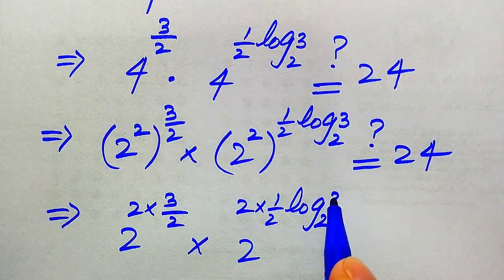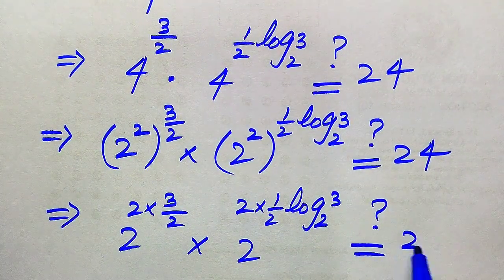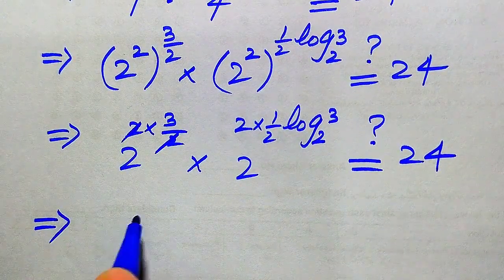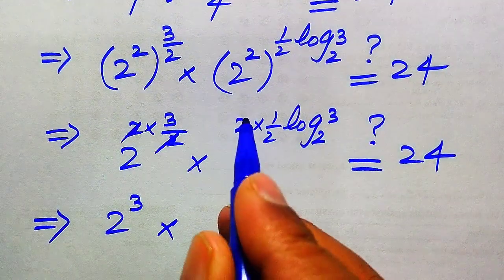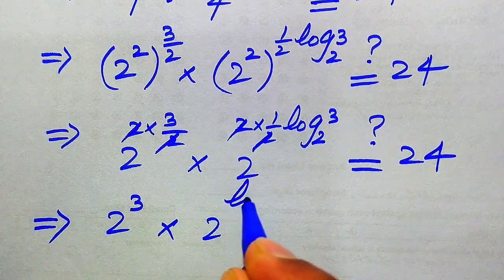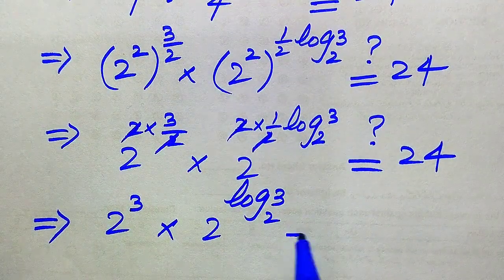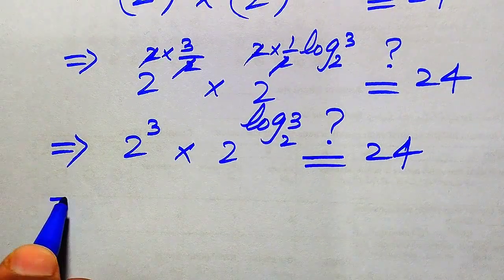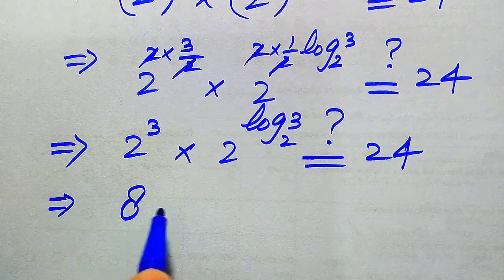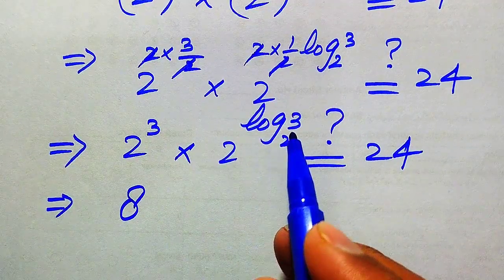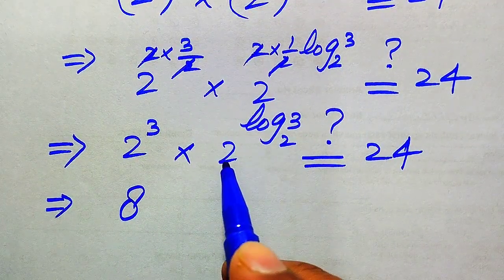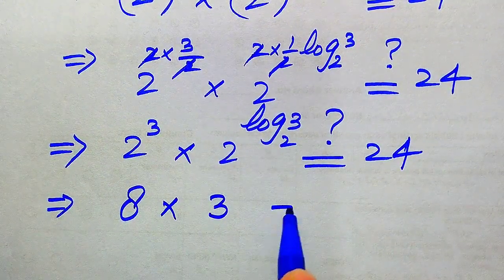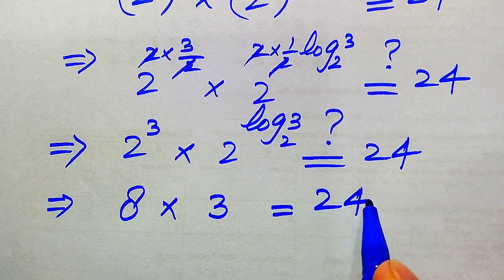We check if this equals 24. The 2 and 2 cancel, giving 2 to the power of 3. And those cancel as well, giving 2 to the power of log 3 with base 2. Then 2 to the power of 3 becomes 8, and 2 to the power of log base 2 of 3 — the base 2 and log base 2 cancel — leaving only 3.